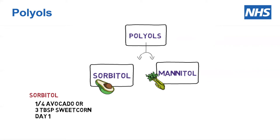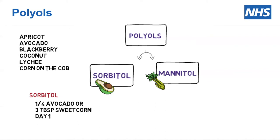For sorbitol using avocado: a quarter of an avocado on day one, half an avocado on day two, and three quarters on day three. If using corn on the cob: half a corn on the cob on day one, one full corn on the cob on day two, and one and a half corn on the cobs on day three. Other foods that contain only sorbitol include apricots, blackberries, coconut, and lychees.